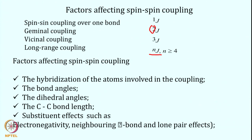The factors that affect spin-spin coupling include: hybridization of the atoms involved, bond angle between the spins, dihedral angle between two planes — which is very important in protein structure — bond length (single versus double bond), and substituents such as lone pairs, pi bonds, or electronegative groups attached to the coupling pathway.